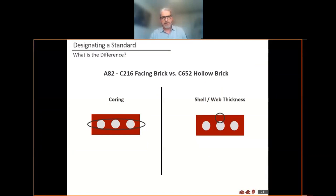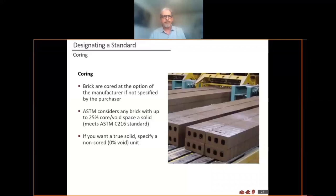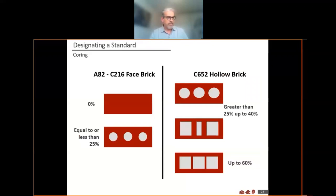Here are some actual picture examples of the differences between the standards. A82 and C216 would be represented by the picture on the left, and C652 would be better represented by the picture on the right. The differences between them are the percentage of the brick which is void, and the thicknesses of the webbing and the distance between the core holes in the face. This again refers to the difference in terminology — cord versus solid.